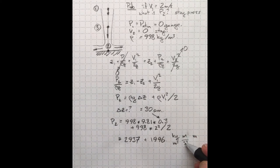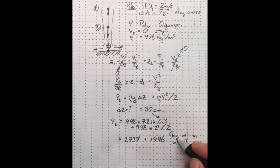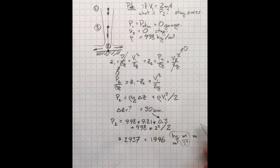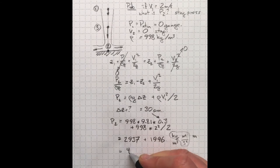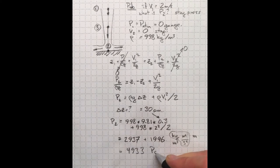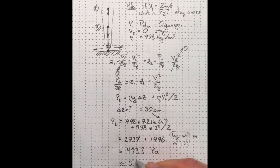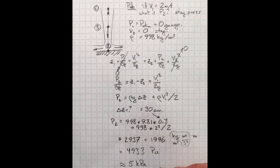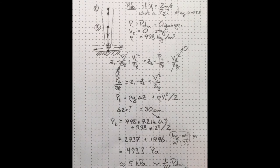Kilogram meter per second squared is a newton, so that's in newtons per square meter or pascals, 4933 pascals, or about 5 kilopascals, which is about 1/20th of atmospheric pressure.